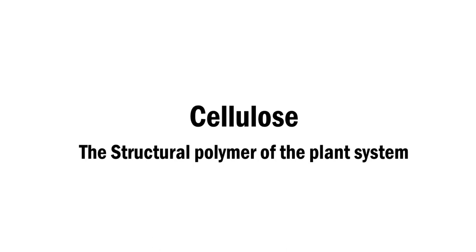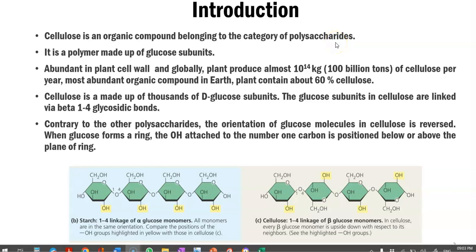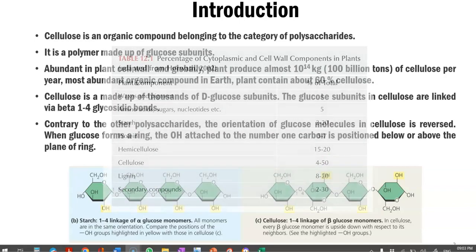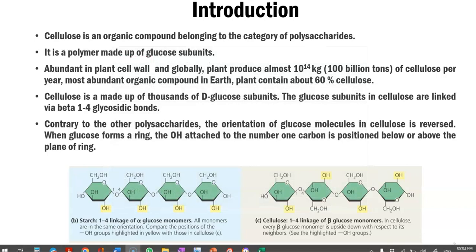Cellulose is an organic compound that belongs to the category of polysaccharides. It is a polymer made up of glucose subunits, abundant in the plant cell wall. Globally, plants produce almost 10 to the power 14 kg — that is 100 billion tons — of cellulose per year, making it the most abundant organic compound on the earth's surface. Plants on average contain about 60% of their biomass made up of cellulose.